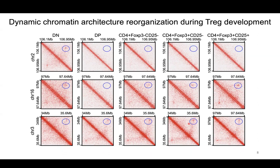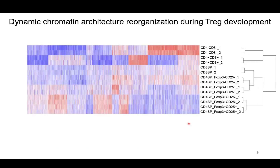We used k-means clustering to profile all the different chromatin interactions across all cell populations checked. In this heatmap, we could see that each population has a distinct pattern of chromatin interactions from double-negative to double-positive and also single-positive T cells.